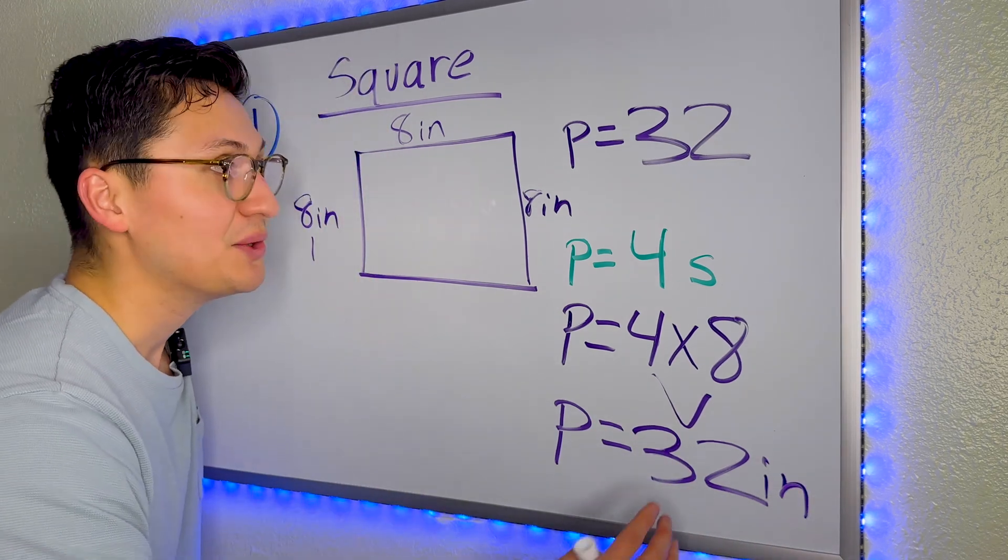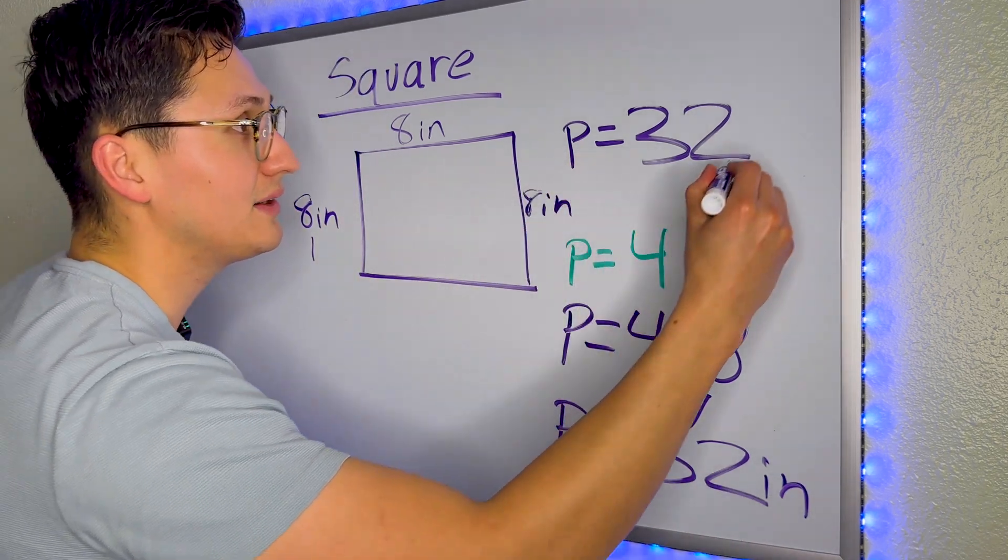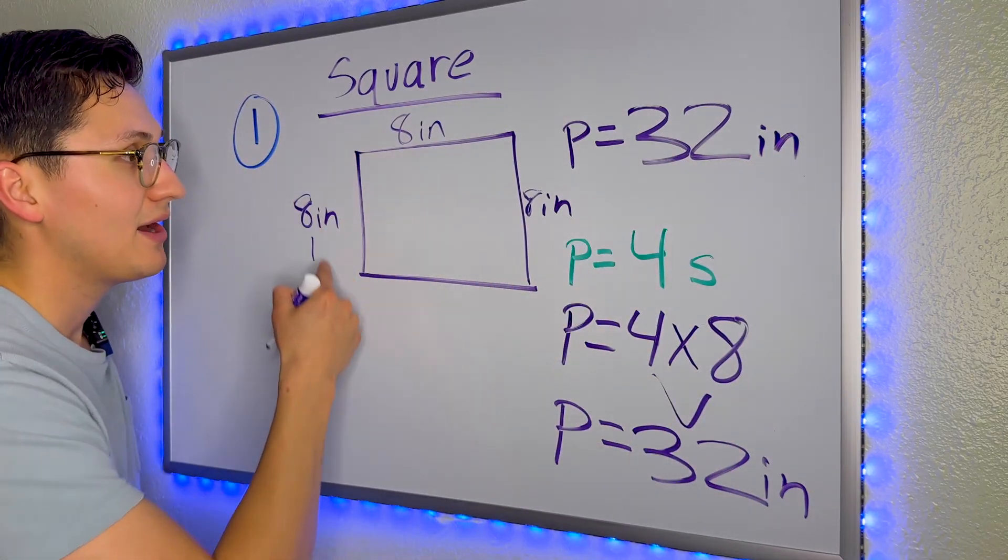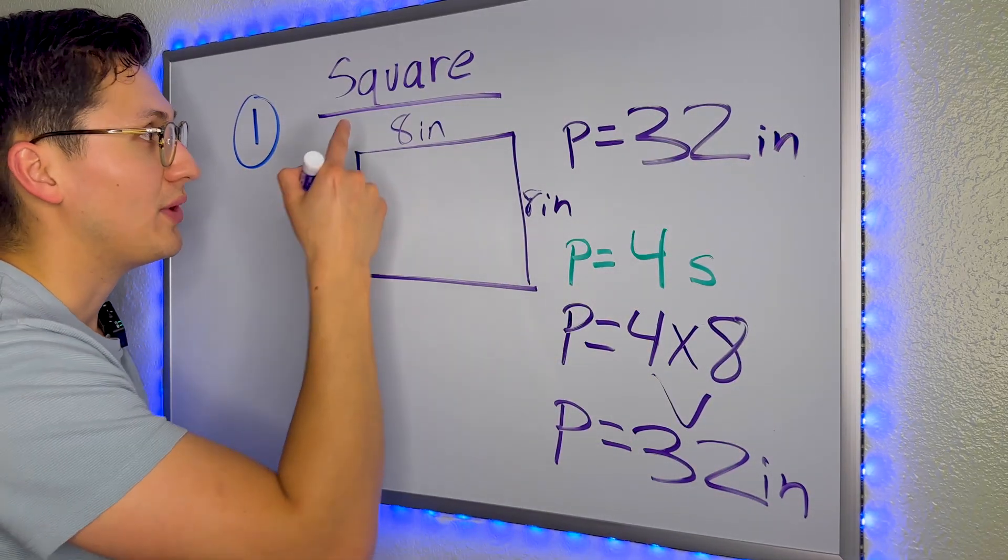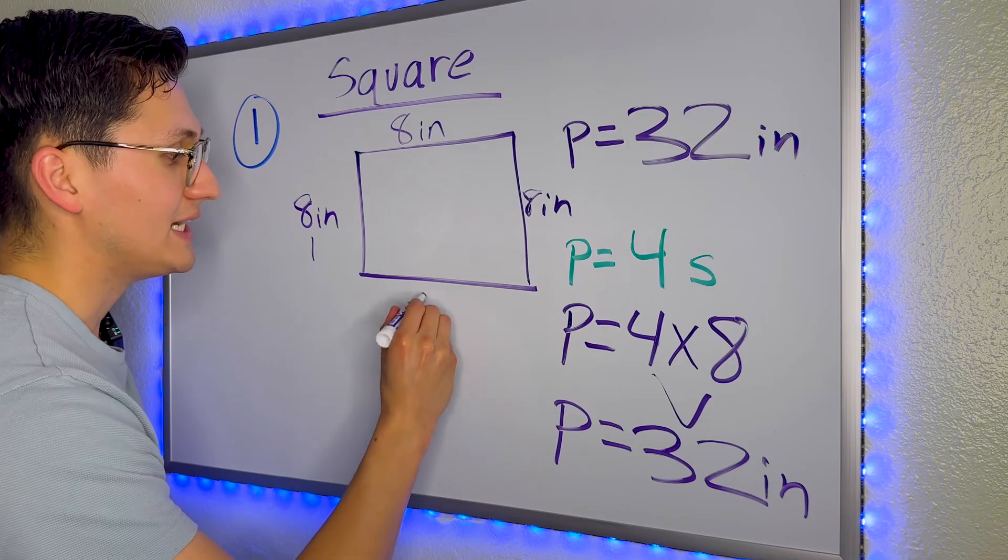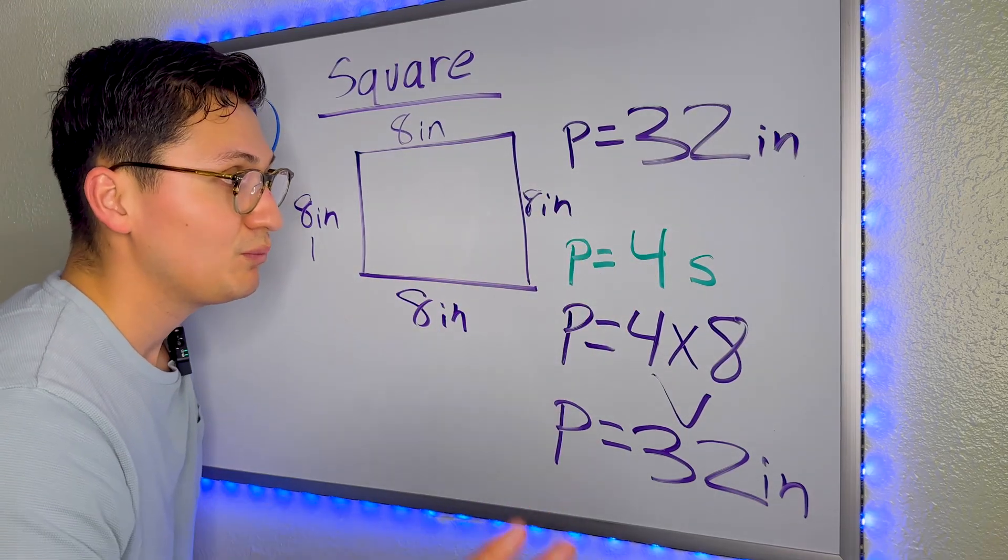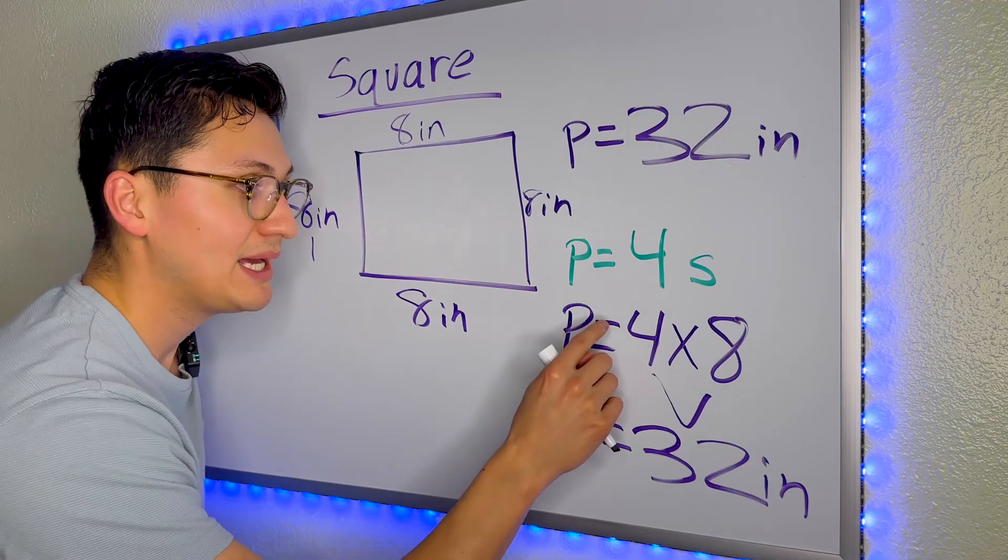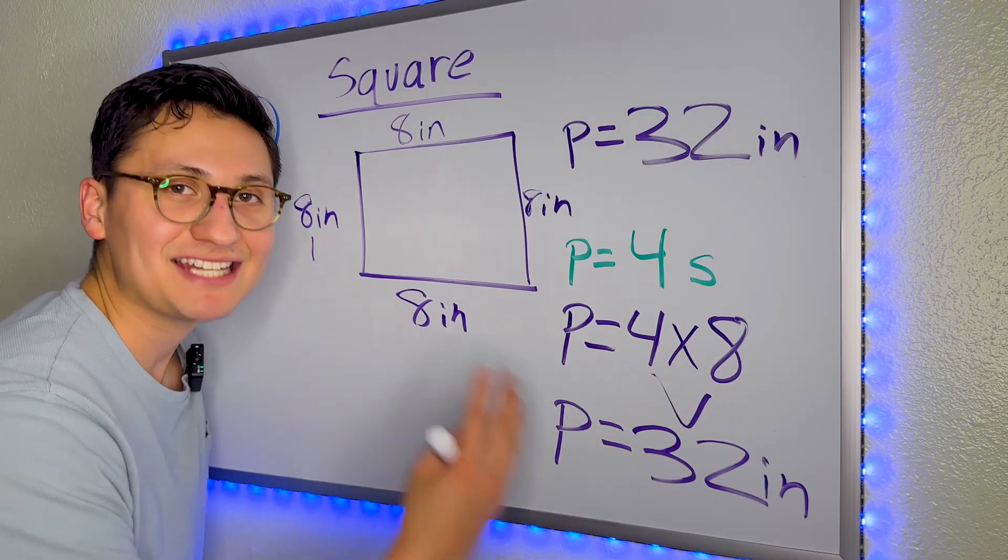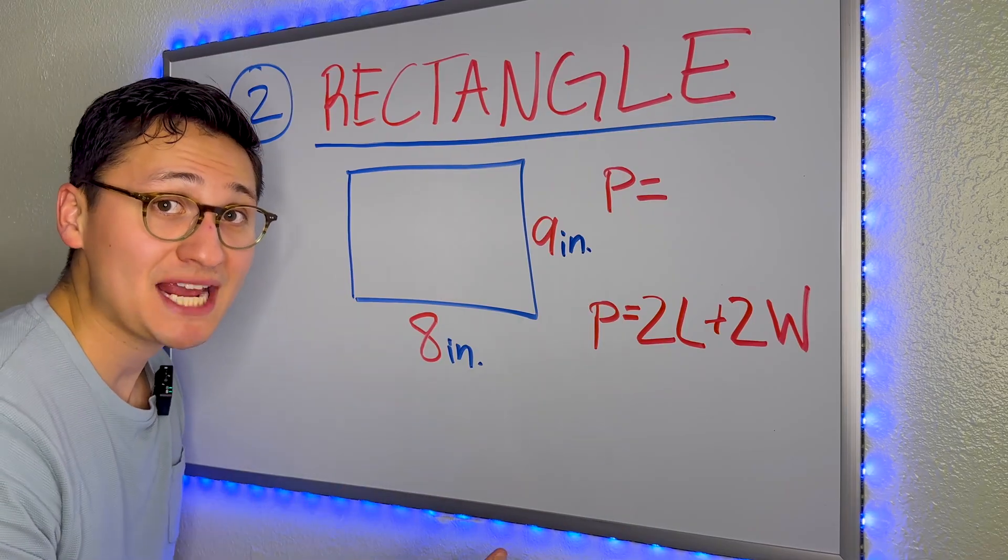And as you can see, we got the same answer over here when we added all of them. So eight plus eight plus eight plus eight is 32. Or we can do the formula, plug in the numbers, and we're going to get the same answer.